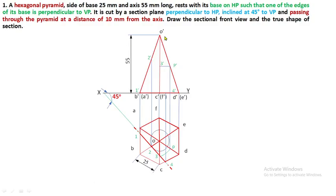O dash C dash F dash is still in thin line. Check: O to 3 is the remaining portion, and 3 to C is the removed portion. Complete O dash to 3 dash by means of continuous thick lines. Since 3 to C is removed, and OF is the invisible slant edge when seen from the front, the remaining portion 3 dash to F dash must be converted to hidden lines, because OF is completely in the remaining portion but still invisible.